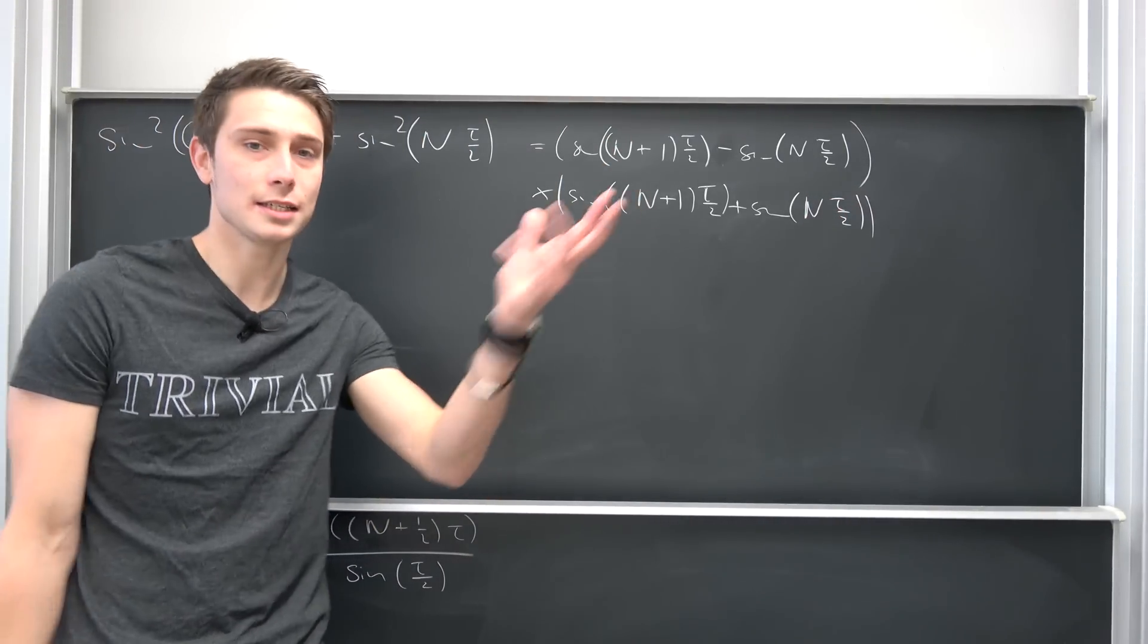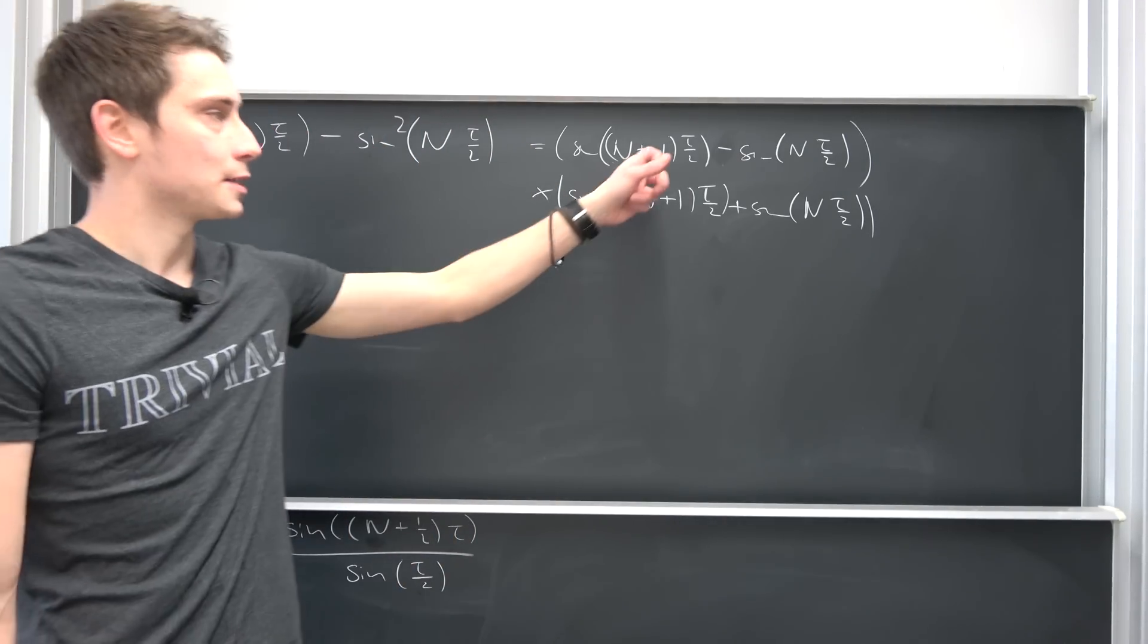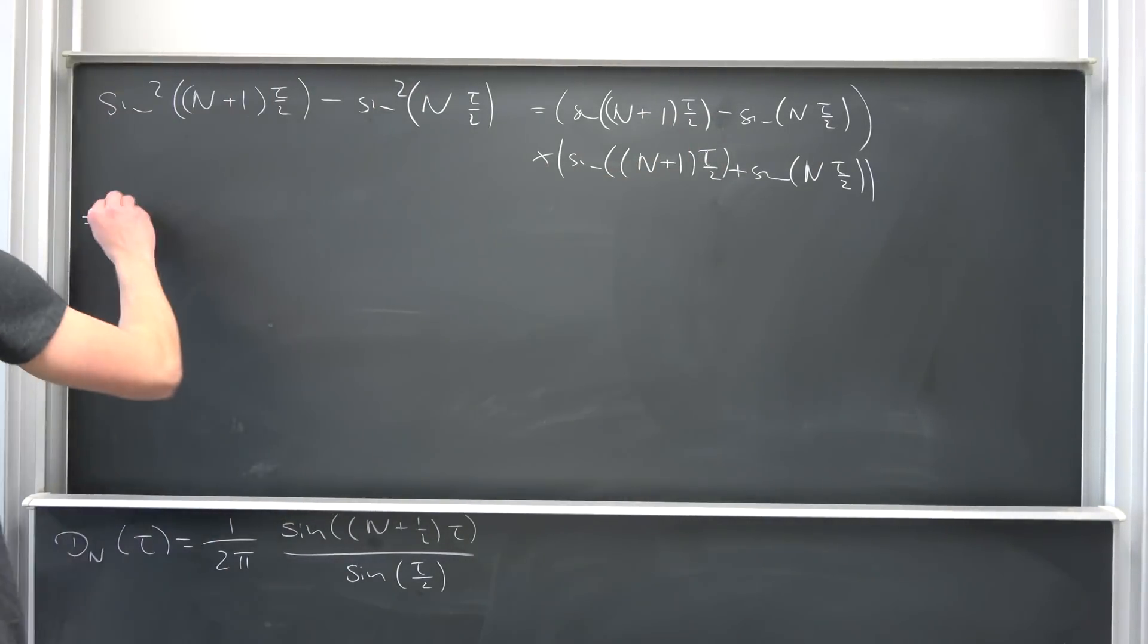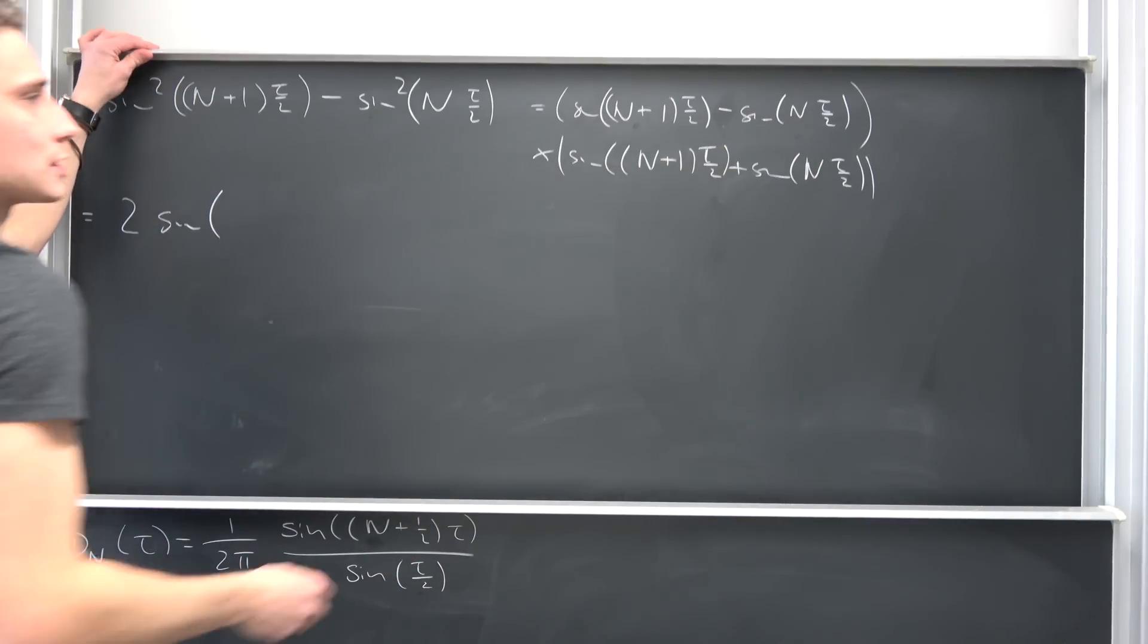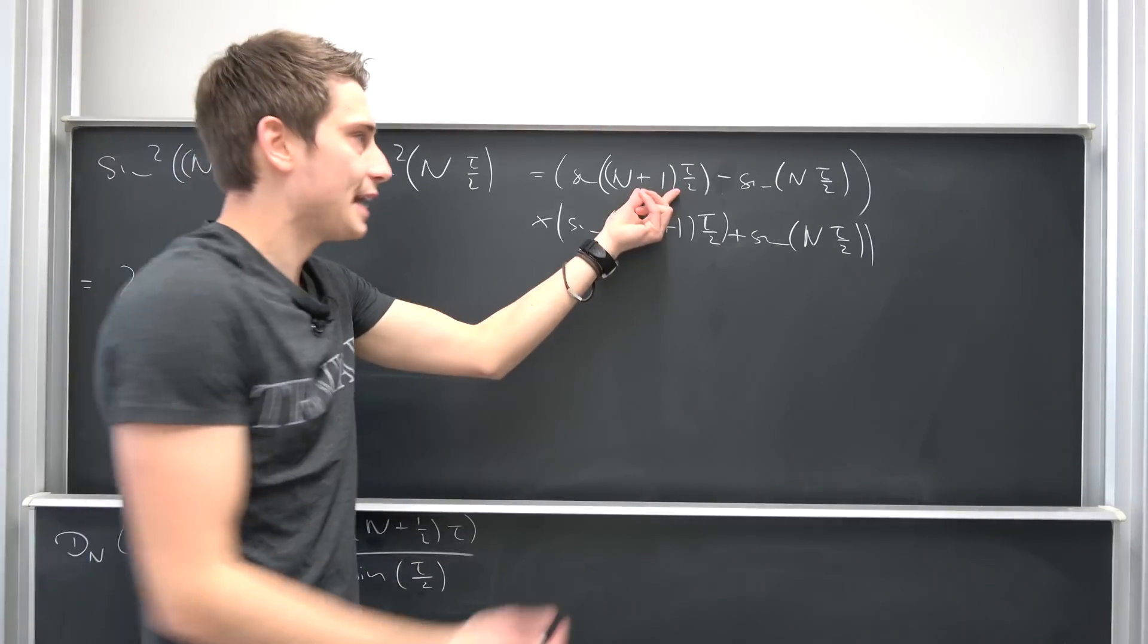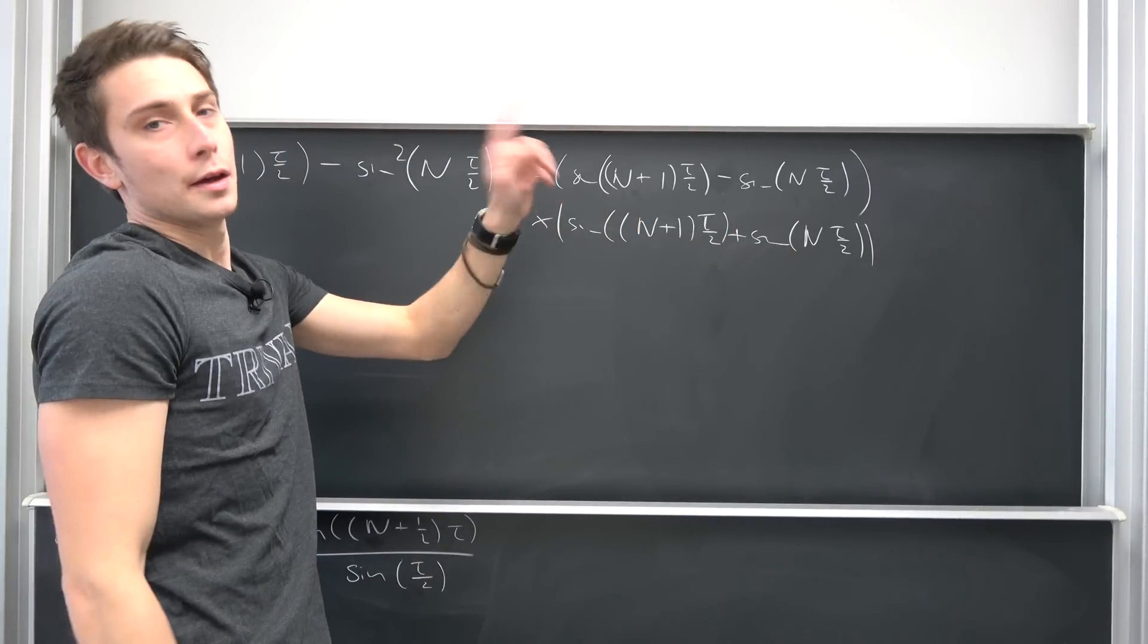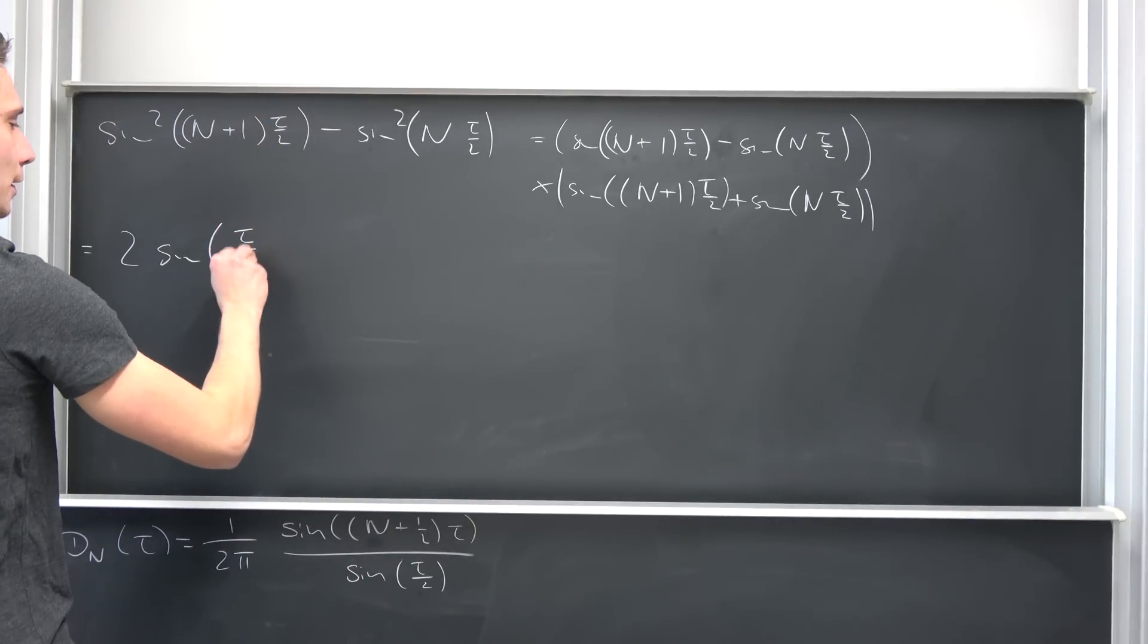I haven't done this addition formula for nothing a few days ago. So let's consider this to be our a and this to be our b. Then we have derived that this difference of sine waves is nothing but two times the sine of (a-b)/2. This is going to give us, so we have a minus b, so this is n*tau/2 + tau/2 - n*tau/2 is 0, so we are going to end up with tau/2 over 2. This is going to give us tau over 4.